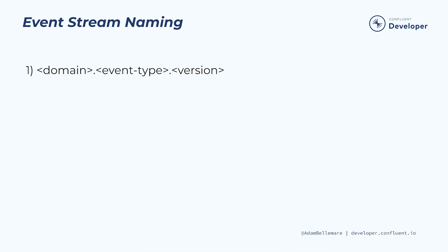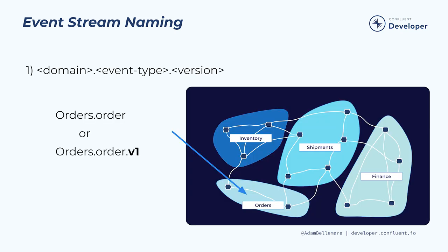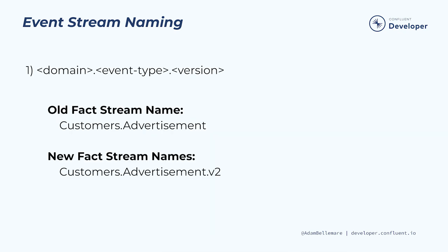Here's one option for naming event streams. In this format, we combine the domain, the event type, and the version of the stream together into a single name. For example, the orders domain could contain a facts stream that contains all of the order facts. You could choose to add .v1 to the end of the name, or go with a standard that anything without a version number is simply the initial version. If we take a customers.advertisement stream and end up having to do a breaking schema change, the new stream would be appended with .v2. This indicates that there was a breaking change and that the first version would eventually be removed.